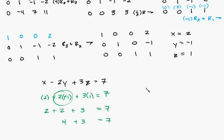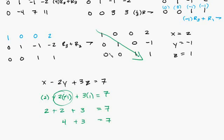I didn't get into too many specifics about interchanging rows — I'll do other examples like that, but this was just to get the idea of this method. All you're doing is getting 1s diagonally: start by getting a 1 here, then a 0, then a 0, then a 1, then a 0, then a 1, a 0, a 0. When you have the 1s diagonal with 0s everywhere else, you've got your answers. The 1s represent 1x, 1y, 1z — make sure you label everything x, y, z.